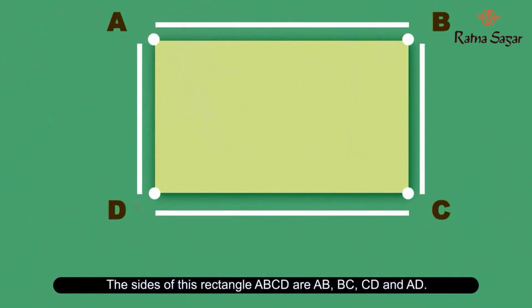The sides of this rectangle ABCD are AB, BC, CD, and AD. Its 4 corners are A, B, C, and D.